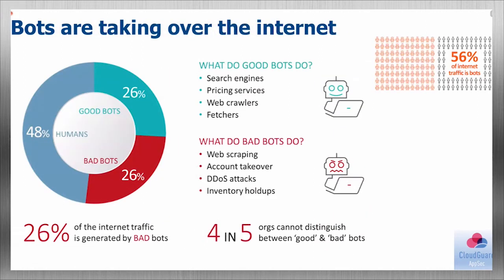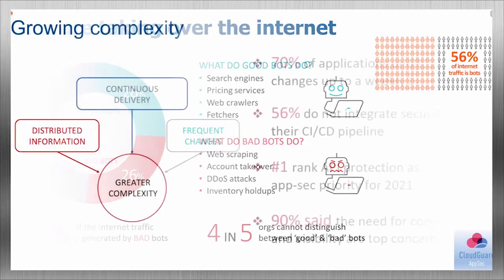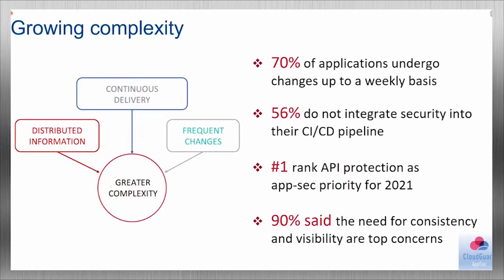Bots are taking over the internet — with good reason. Statistics say that 56 percent of internet traffic is made by bots, of which 26 percent are malicious. Bots are scripts and programs that automate human processes. Good bots help us search the internet, while malicious ones steal identity or carry out DDoS attacks by making the same request from many locations simultaneously, slowing down or disabling the application.